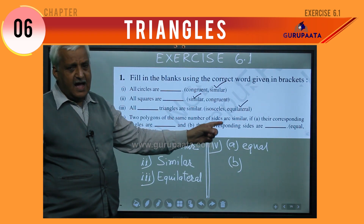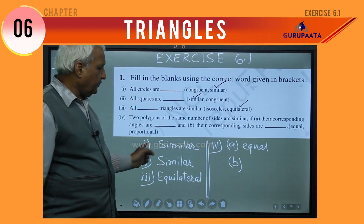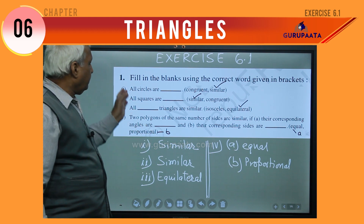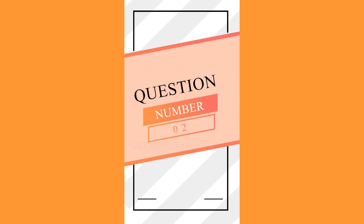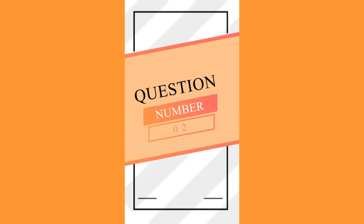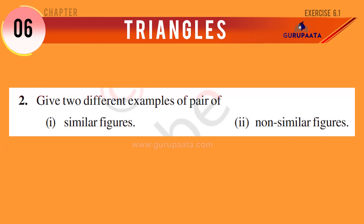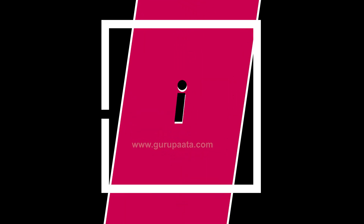Third question: all dash triangles are similar. The options are isosceles or equilateral. The correct answer is equilateral. I will tick the correct answer and also write the correct answer here.